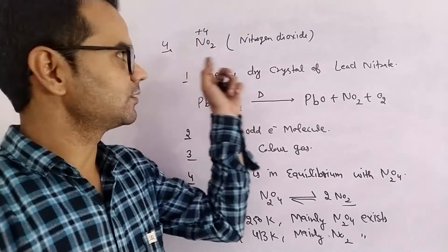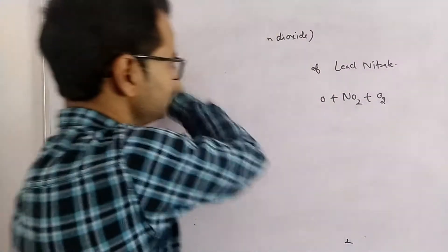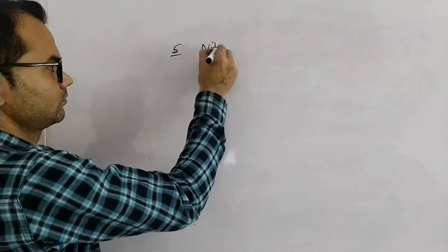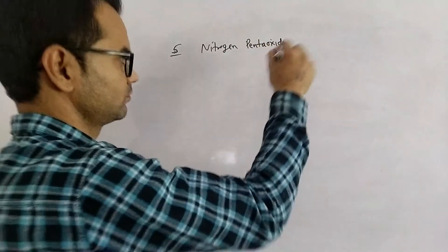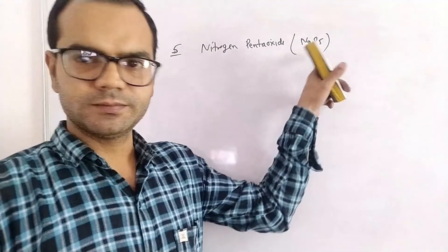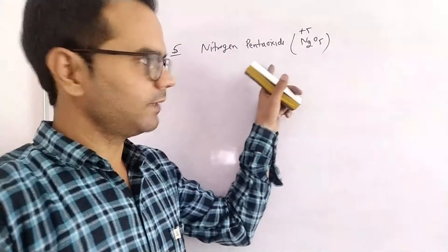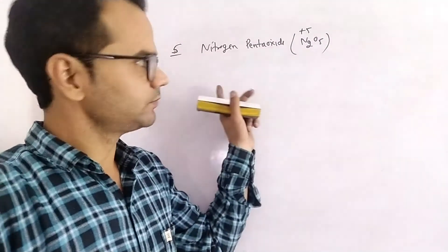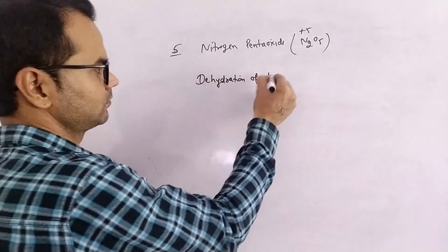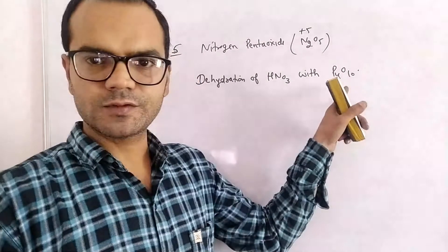This is the fourth oxide, nitrogen dioxide. The last oxide is Nitrogen Pentoxide, N₂O₅, with oxidation state +5. It is prepared by dehydrating concentrated nitric acid with Phosphorus Pentoxide. Phosphorus pentoxide is a water-soluble oxide with great affinity for water, so it removes water from nitric acid, and as a result N₂O₅ is formed along with phosphoric acid.